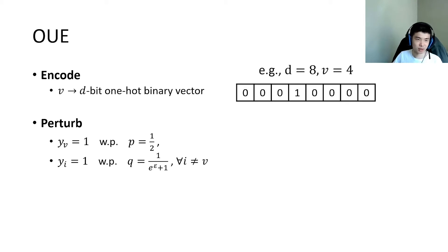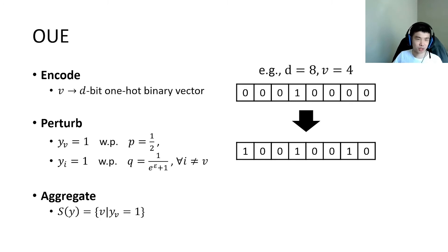Otherwise, if the bit is 0, then it is flipped to 1 with probability q. Then, in the aggregate step, the perturbed vector supports all items whose corresponding bits in the vector equals to 1.